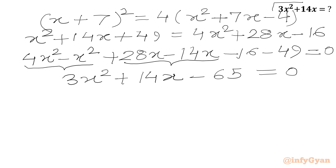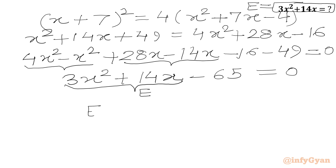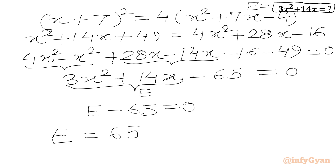We can see that 3x² + 14x is our required expression E. So we write E - 65 = 0, which gives us E = 3x² + 14x = 65.